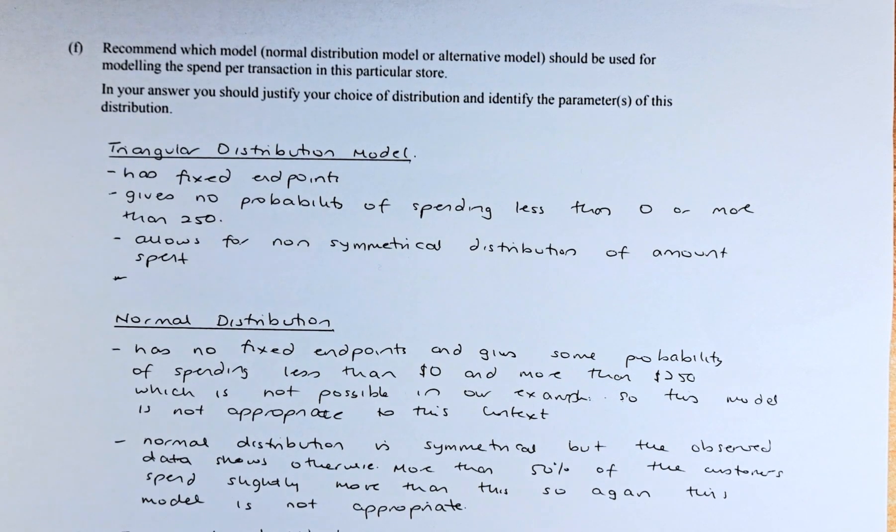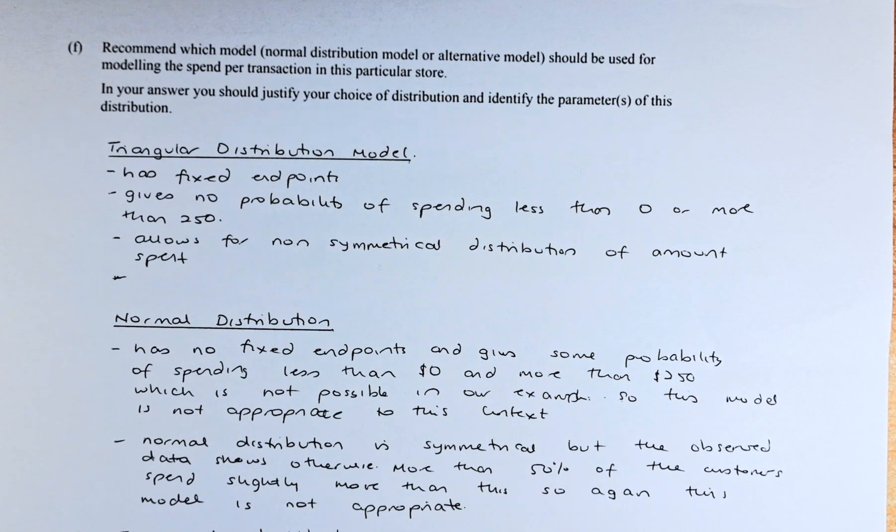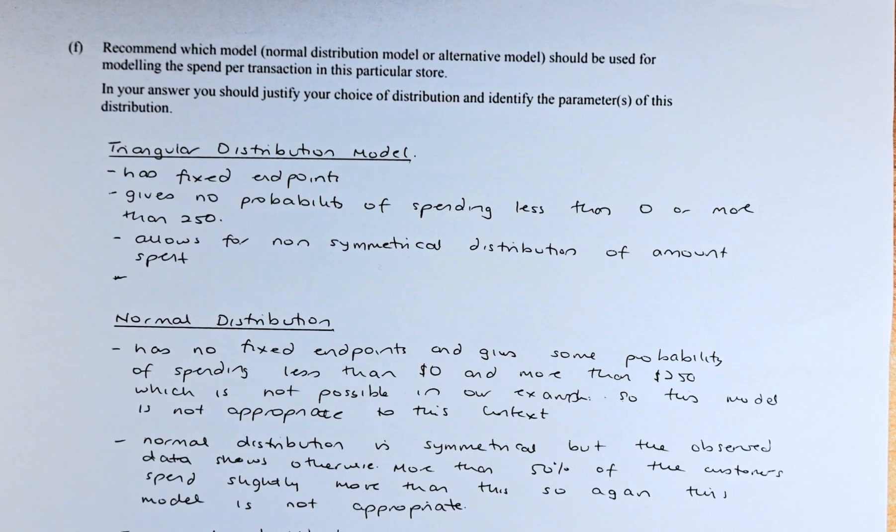And last but not least, you can argue that in normal distribution, the mean, median and mode, they are all in the middle of the graph. In the observed, the one that we showed earlier, the mean is 127 and the mode is 130. They are not equal. Again, it is not appropriate.